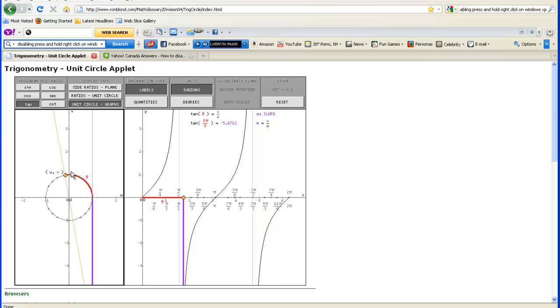Over here in the second quadrant. Remember, all students take calculus is the mnemonic that we use. In the second quadrant, I know that tangent is negative because the y values are positive, but the x values are negative. So across pi halves, all of a sudden my tangent just flips, and down it goes here.